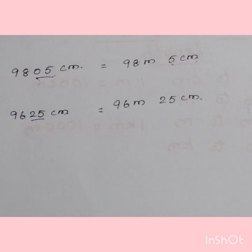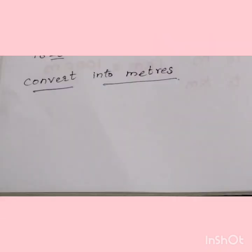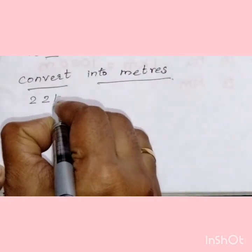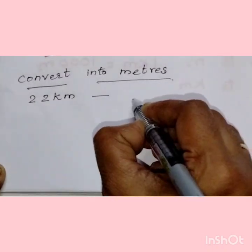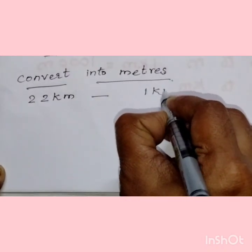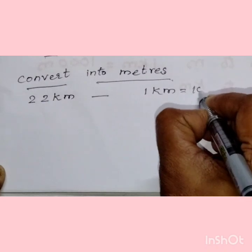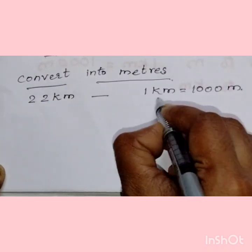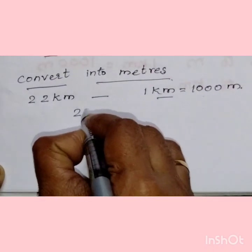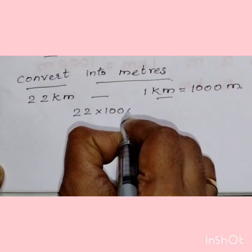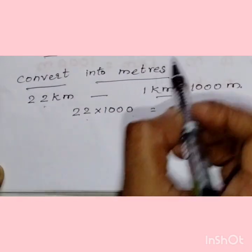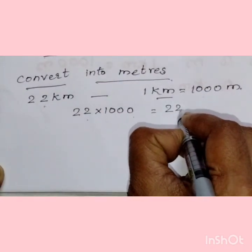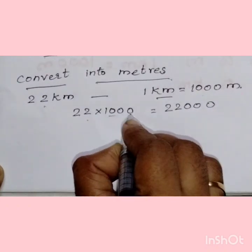Now let's learn how to convert kilometers into meters. Our first question is 22 kilometers. Before converting, remember that 1 kilometer equals 1000 meters. Since we are converting from a higher unit to a smaller unit, we multiply. So 22 × 1000 = 22,000 meters.